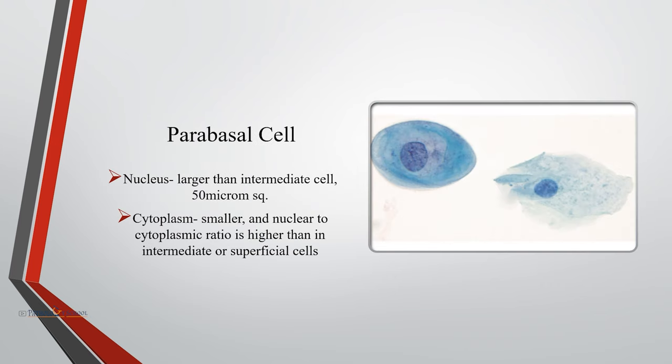Parabasal cells are the least mature cells in cervical cytology specimens. They are derived from the deep cell layer, and their nucleus is larger than that of intermediate cells, with a nuclear cross-sectional area of 50 micrometers squared. Cytoplasm is smaller, and the nuclear-to-cytoplasmic ratio is higher than in intermediate or superficial cells. They usually predominate during postpartum and postmenopausal states where there is lack of hormonal stimulation.